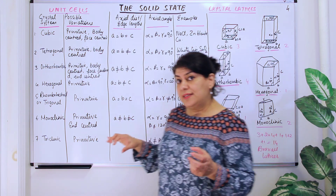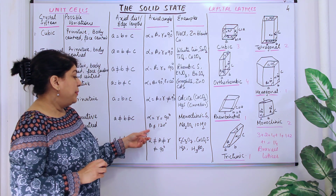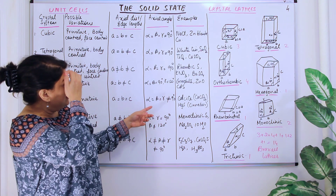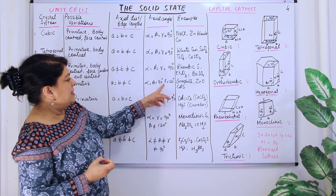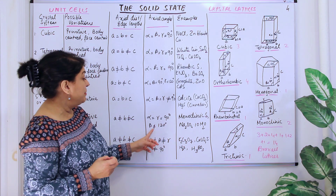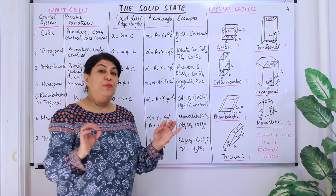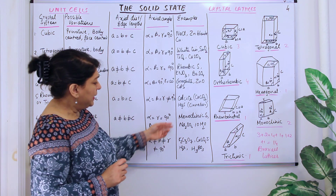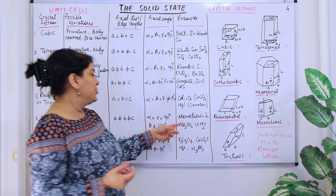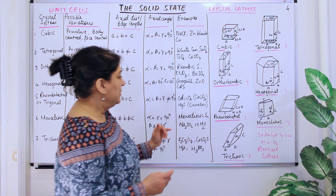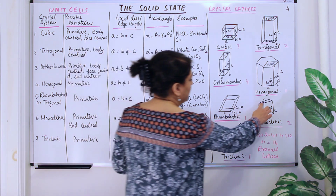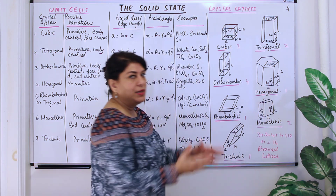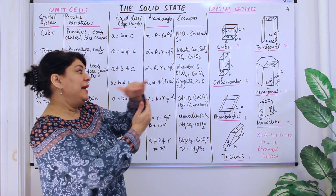For a monoclinic arrangement, a is not equal to b is not equal to c — all three sides are different. The angles: alpha is equal to beta, both are 90 degrees, but gamma is not equal to 90 degrees and not equal to 120 degrees — it is some other angle. Examples of monoclinic crystals are monoclinic sulfur and sodium sulfate.